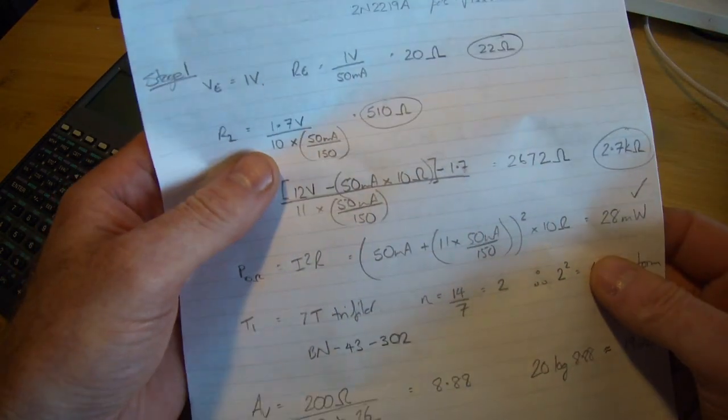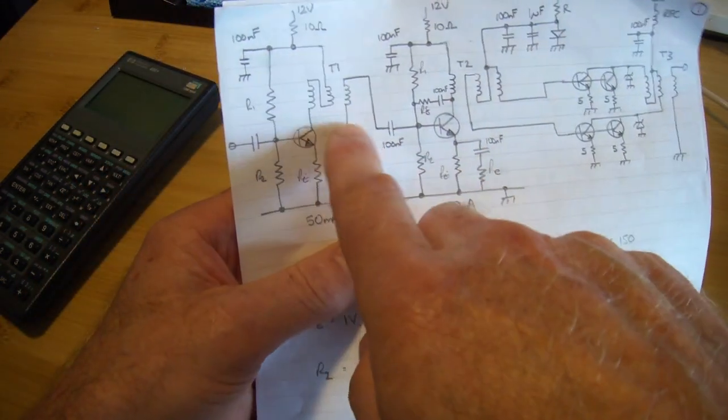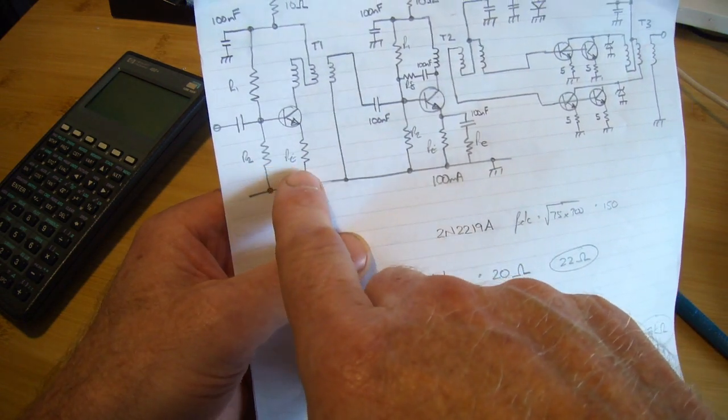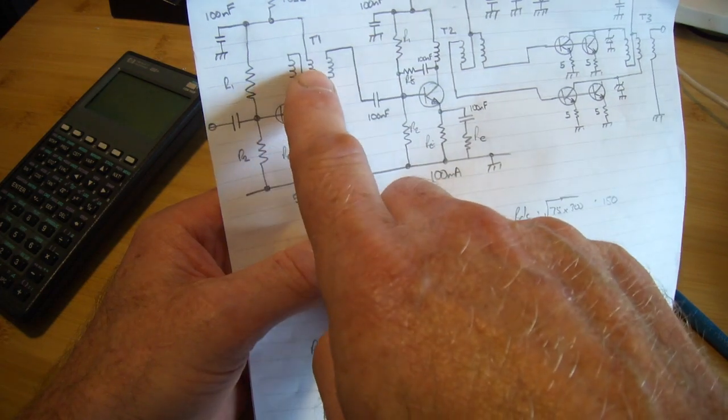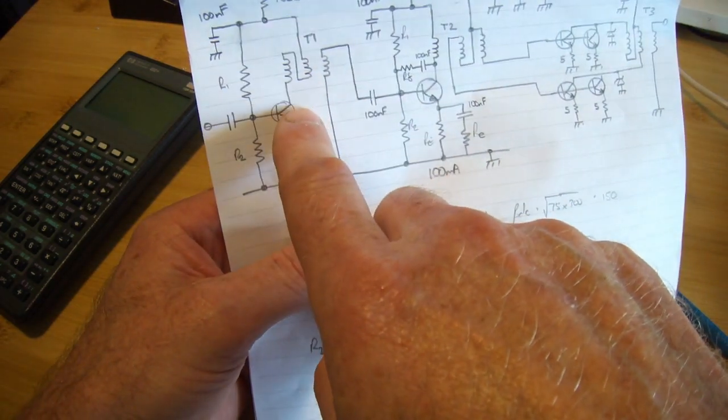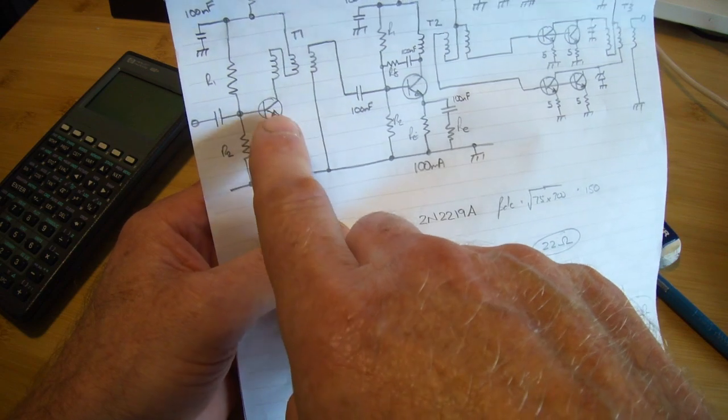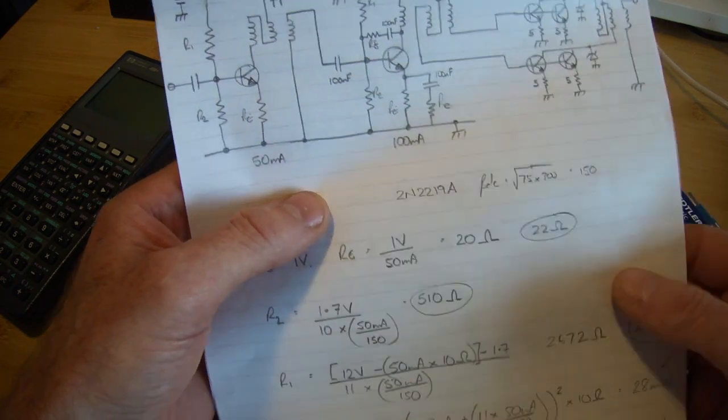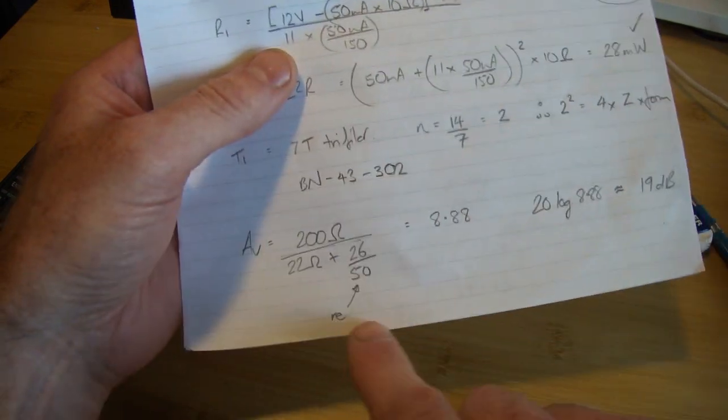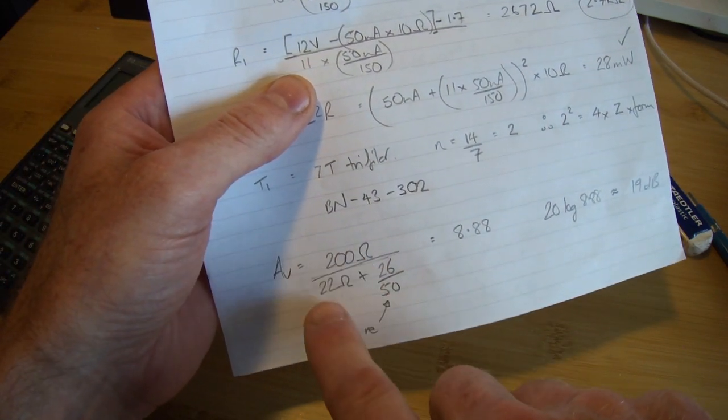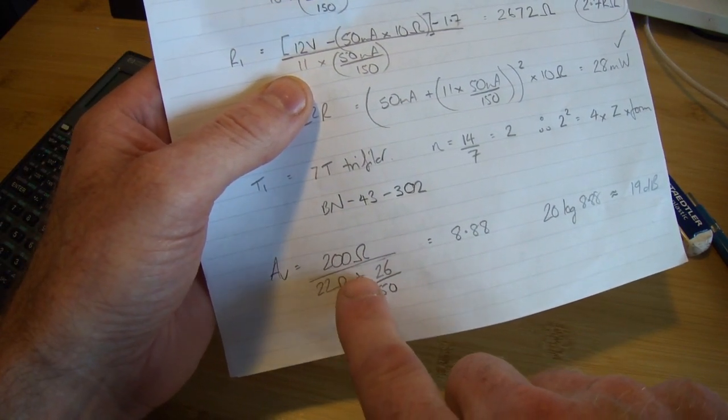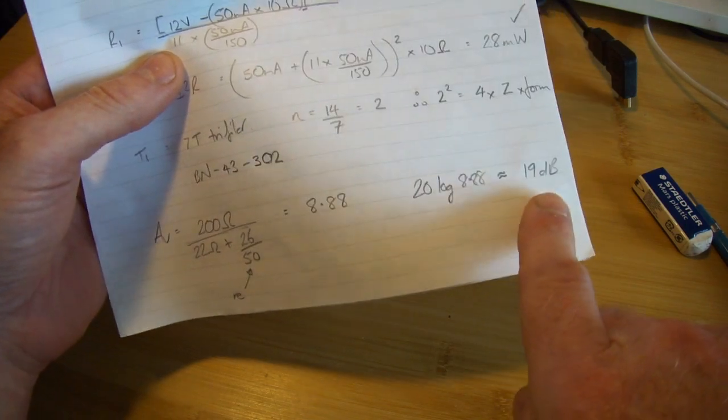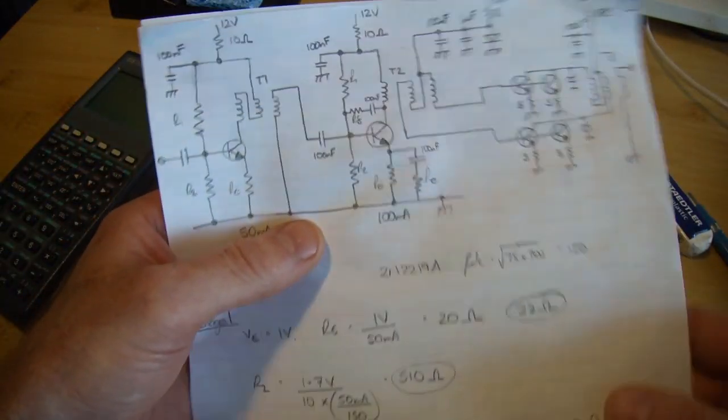Now from a voltage gain point of view, it's going to be our collector impedance divided by our emitter impedance. We are not bypassing our emitter resistor in any way, so it's going to be 200 ohms on the collector, divided by big RE plus little RE, so our junction resistance there. As we know little RE is 26 divided by our emitter current in milliamps. So 200 ohms divided by 22 ohms, our big RE plus our little RE, 26 divided by 50, comes out at 8.88, or approximately 19 dB, on that first stage.